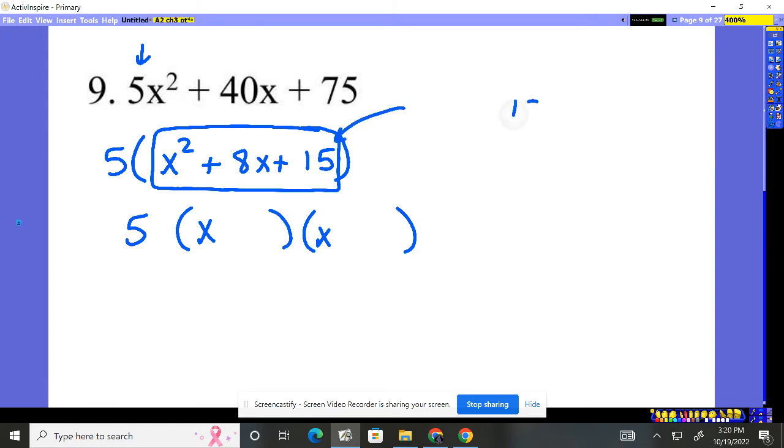I'm going to focus on that 15. What multiplies together to give me 15? 1 times 15, 2 times nothing, 3 times 5, that's it.